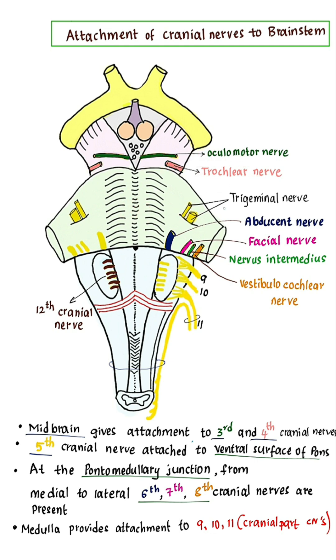The trigeminal nerve is attached to the ventral surface of the pons by 2 roots: the small motor root and the large sensory root.